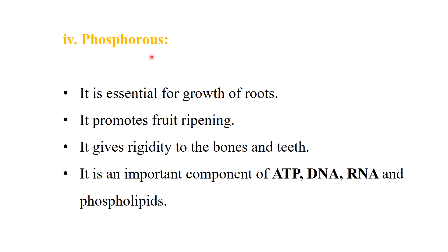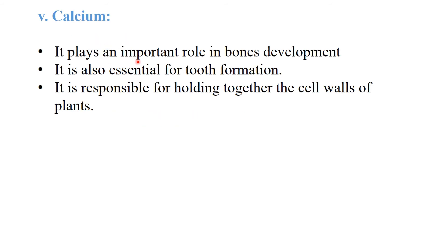Phosphorus: it is essential for the growth of roots in plants, and promotes fruit ripening. It gives rigidity to the bones and teeth. It is an important component of ATP, DNA, and RNA. Calcium plays an important role in bone development — haddiyon ko mazbooti dene mein calcium ka bahut important role hai. It is also essential for tooth formation and is responsible for holding together the cell wall of plants.